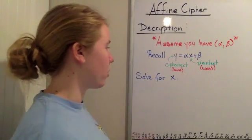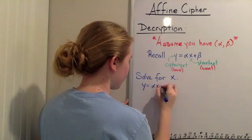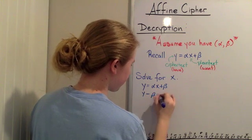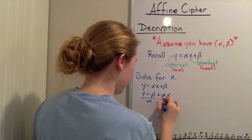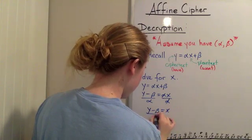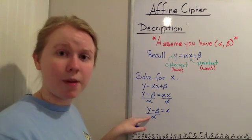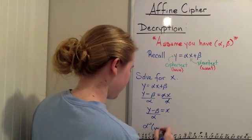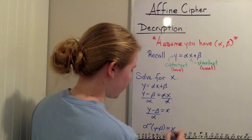So since x is what we want, we're going to solve for x. So I'm going to start with moving the beta over, and now I'm going to divide both sides by alpha. However, right now I have an alpha in the denominator, and I don't want the alpha to be in the denominator, so I'm going to move it up to the numerator,